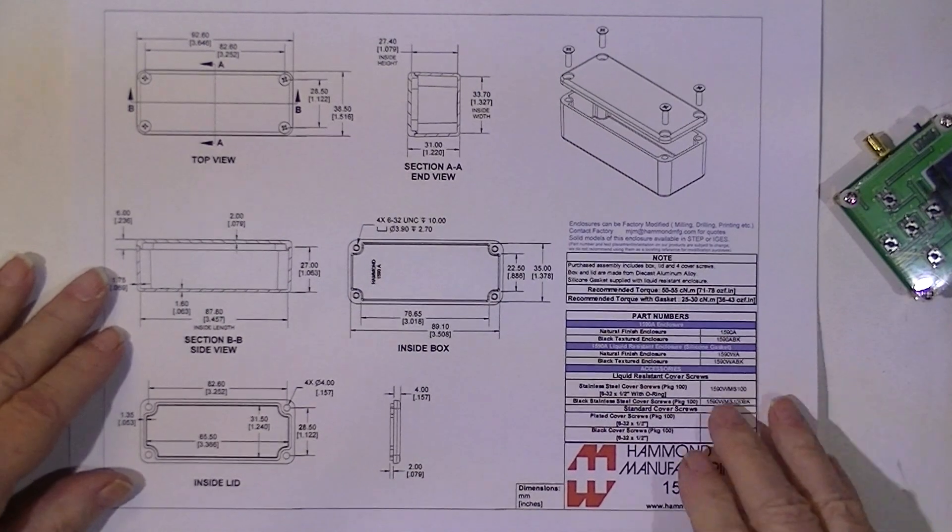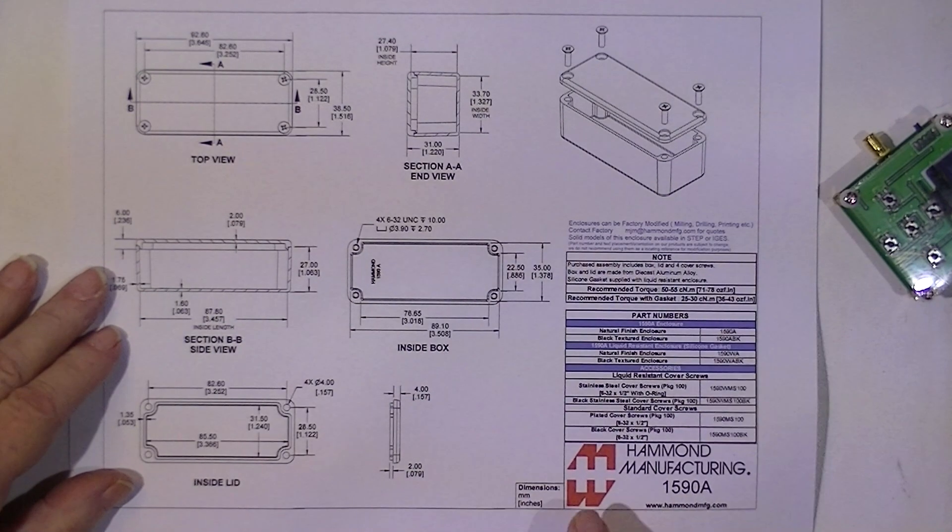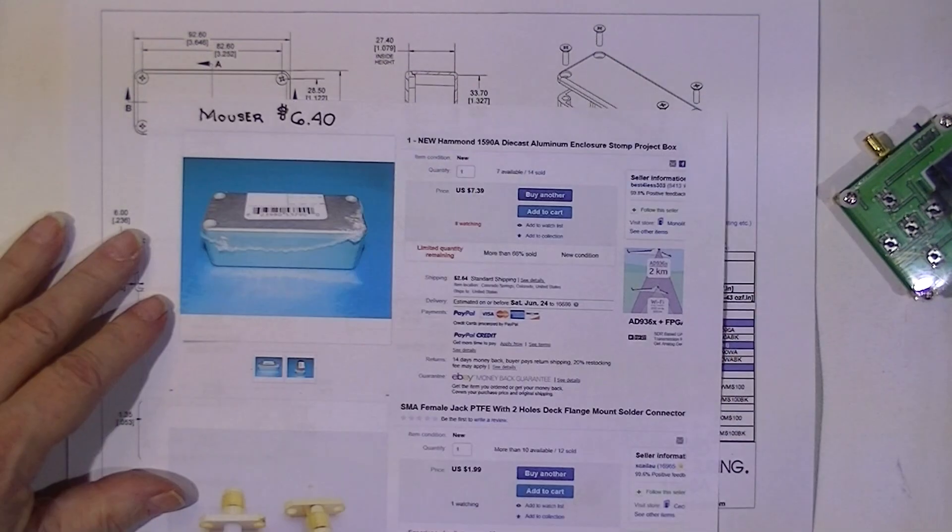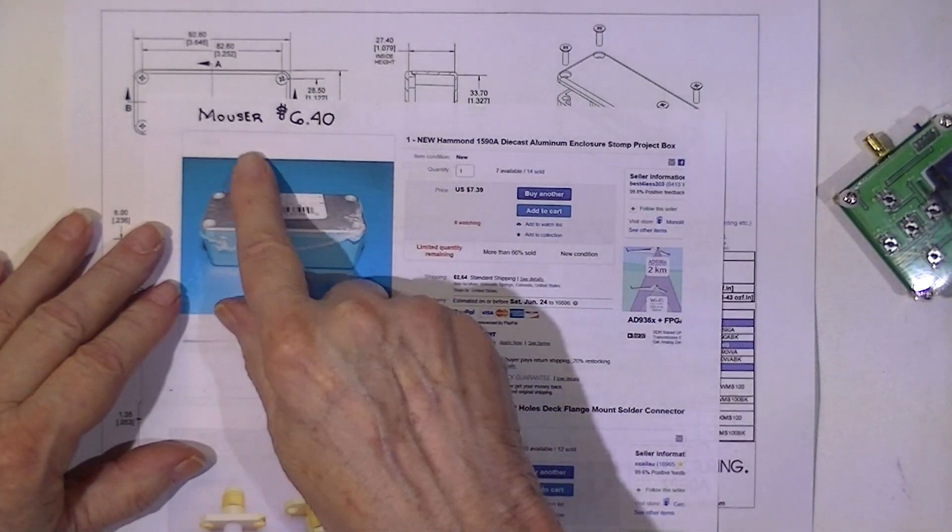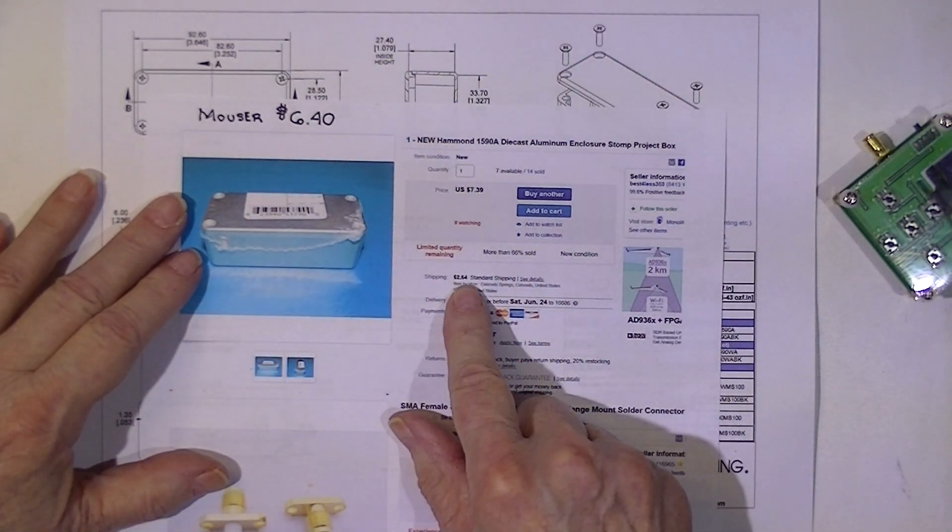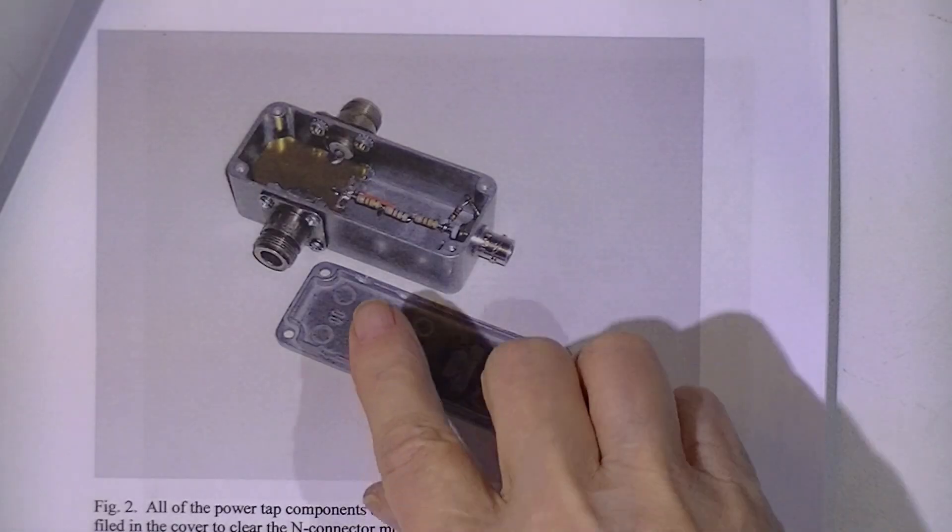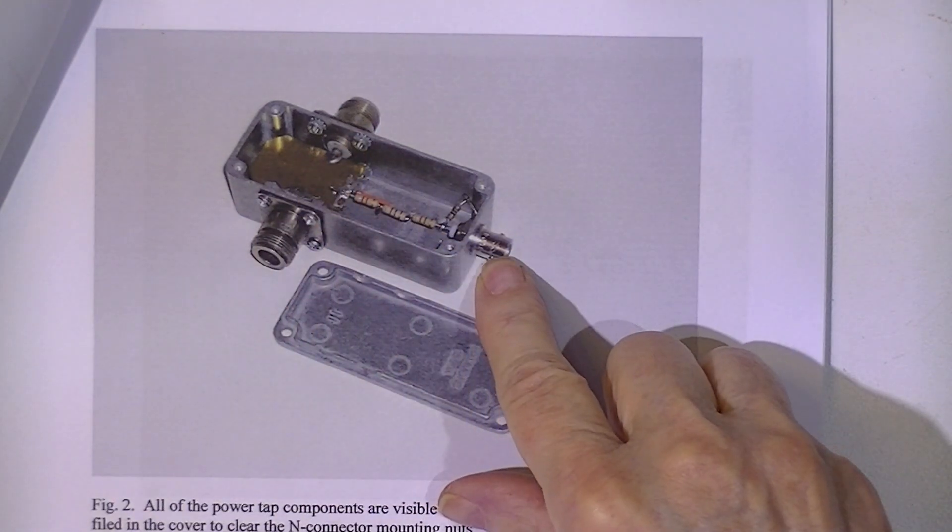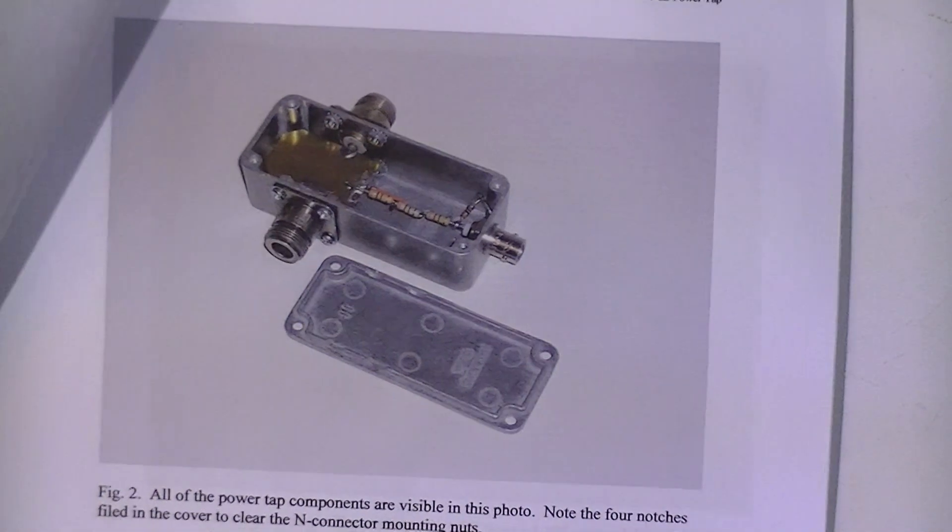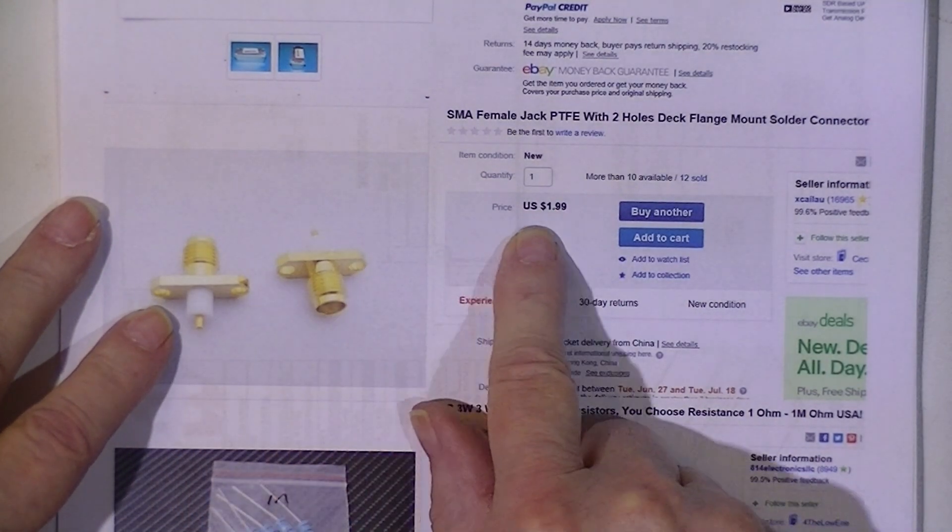The box used in the project is this Hammond 1590A. I intended to make this out of soldered together pieces of circuit board. The box is available from Mauser Electronics for $6.40, or in my case, I bought it for $10 on eBay. Instead of N connectors and BNC connectors, I'm going to try to use SMA connectors. I've settled on the two-hole style, which cost $2 a piece.